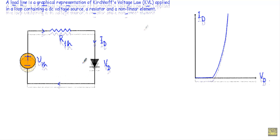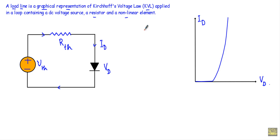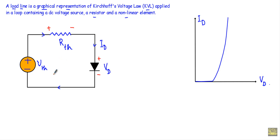Now to draw the DC load line I will apply KVL in this circuit. Before applying KVL, let me indicate the polarities of the elements. The current enters such that one terminal is positive and the other is negative. The positive terminal of the voltage source is connected to the P-side of the diode, and the negative terminal is connected to the N-side. Let's say the voltage drop across the diode is VD.